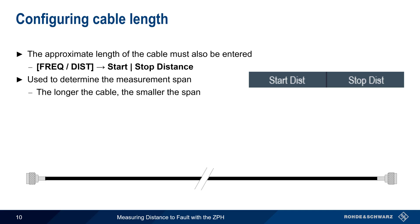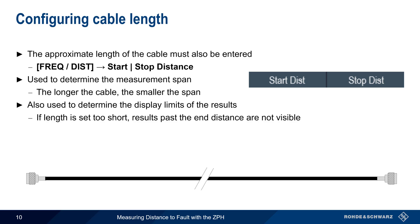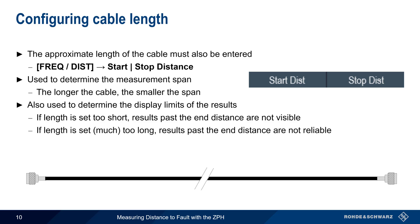The other reason why cable length must be entered is that it's used to determine the display limits on the results. If the length is set too short, then we won't be able to see any cable faults beyond this distance. Setting the length too long is also undesirable, since any results past the end distance will not be reliable. In most distance to fault measurement applications, the approximate cable length is known, but if the length has to be estimated, it's usually best to err on the side of overestimating the cable length.